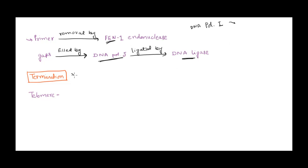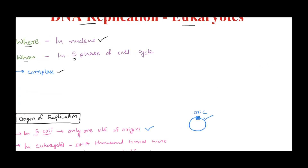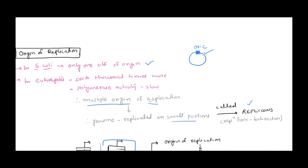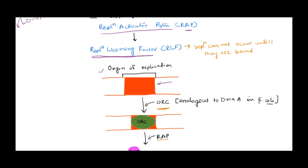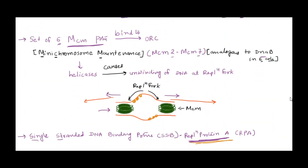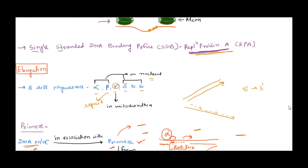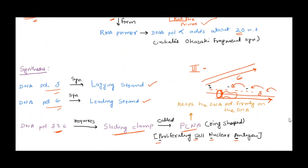For the termination part of eukaryotic replication, we need to discuss telomeres and the telomerase enzyme, which has been covered in detail in a previous video — the link will be provided. Those are all the important points that differ between prokaryotic and eukaryotic replication. Hope this video was helpful — subscribe to the channel for new videos every week.